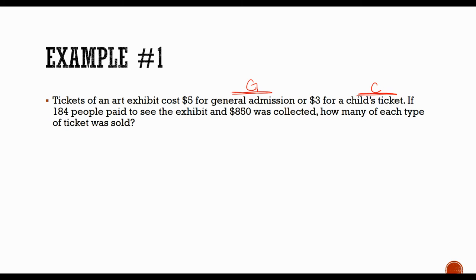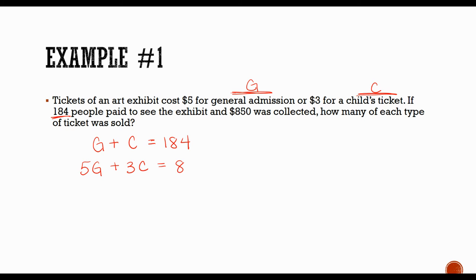Now we start writing equations. When we know the cost of each item, one equation can be based on just the quantity of tickets. If we add general admission tickets plus children's tickets, that equals 184 — the total number of tickets sold. The second equation deals with money: $5 per general admission ticket gives us 5G, and $3 per children's ticket gives us 3C. Adding those together equals $850.